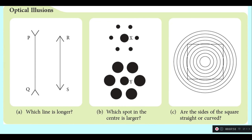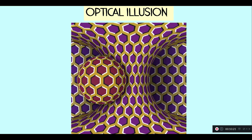Now, let's look at image C. Are the sides of the square straight or curved? When I first look at this image, the lines look curved. This is because the brain is unable to accurately interpret the object seen by the eye due to distractions around the object. This is another example of optical illusion.